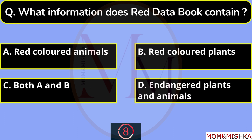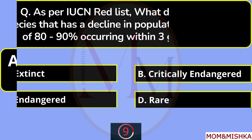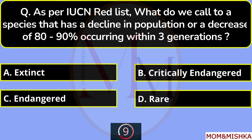What information does the Red Data Book contain? It contains information on endangered plants and animals, option D.